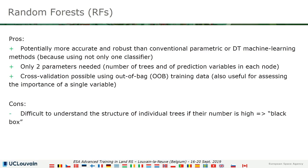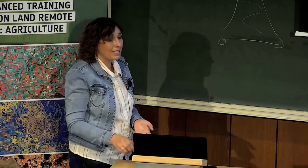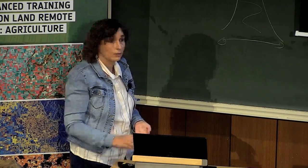Another advantage is that random forest is really easy to tune — there are only two parameters. It is also more accurate than a classical decision tree because you combine multiple classifications.